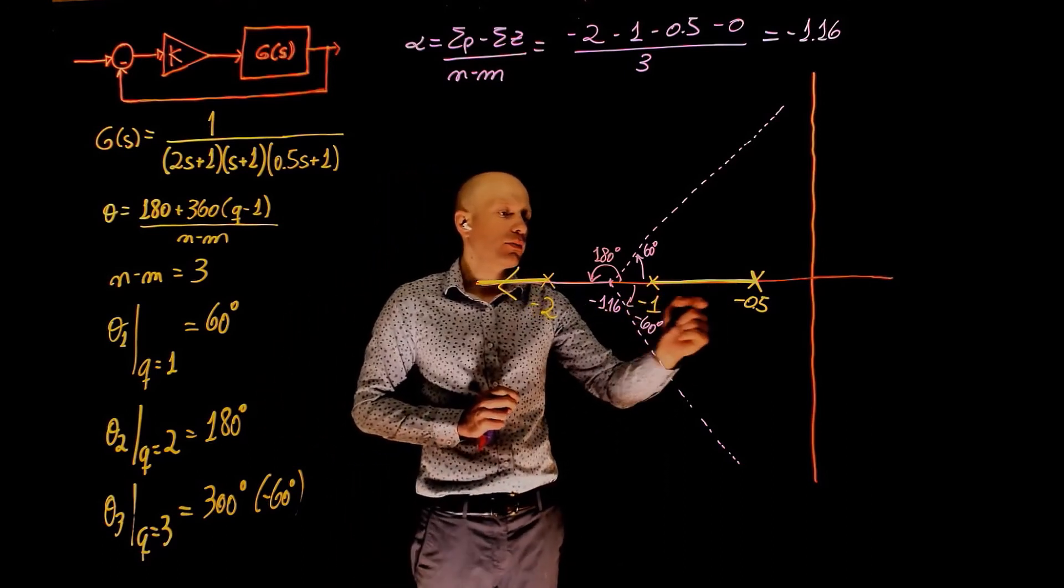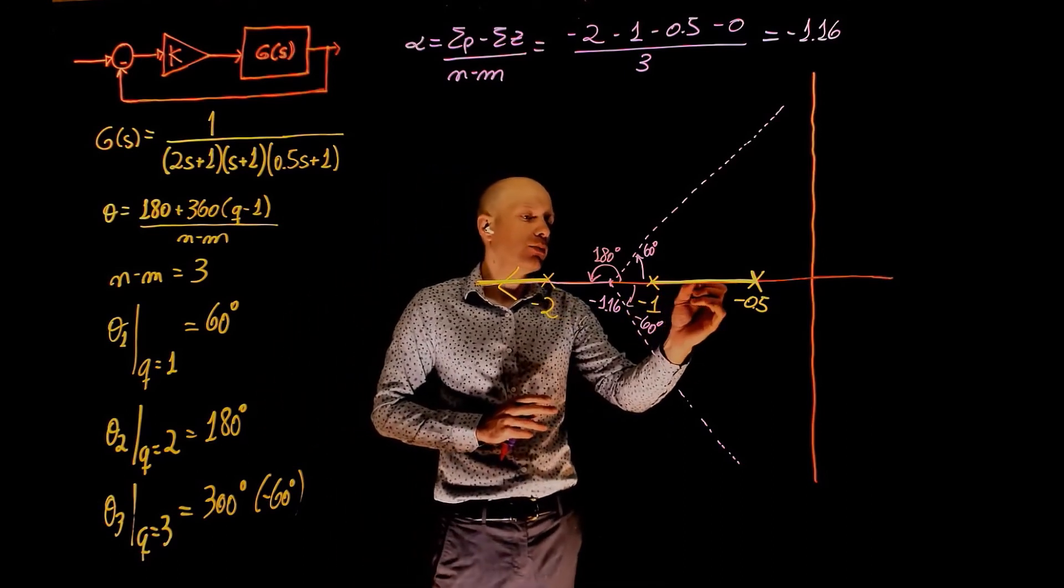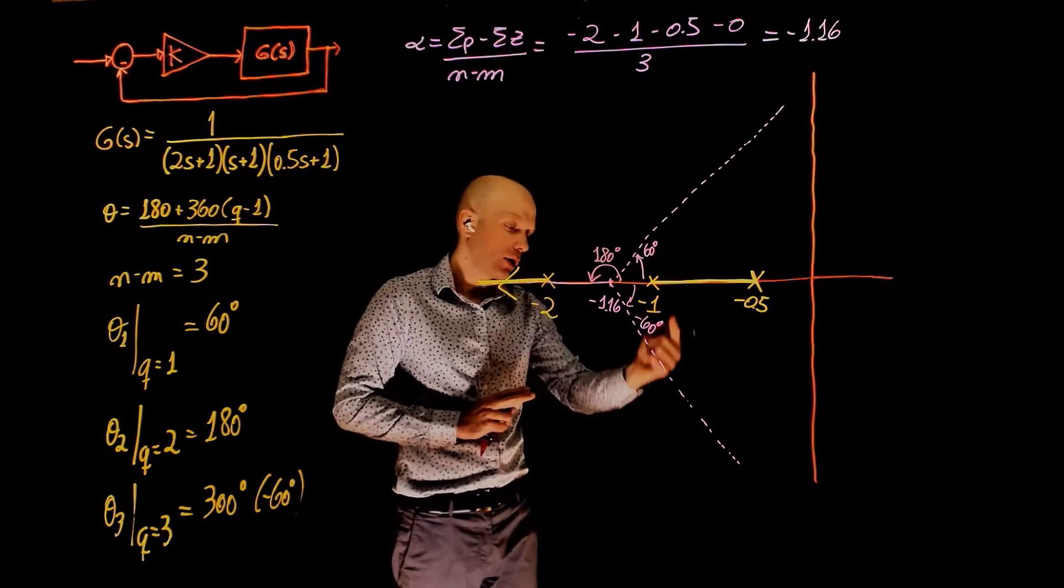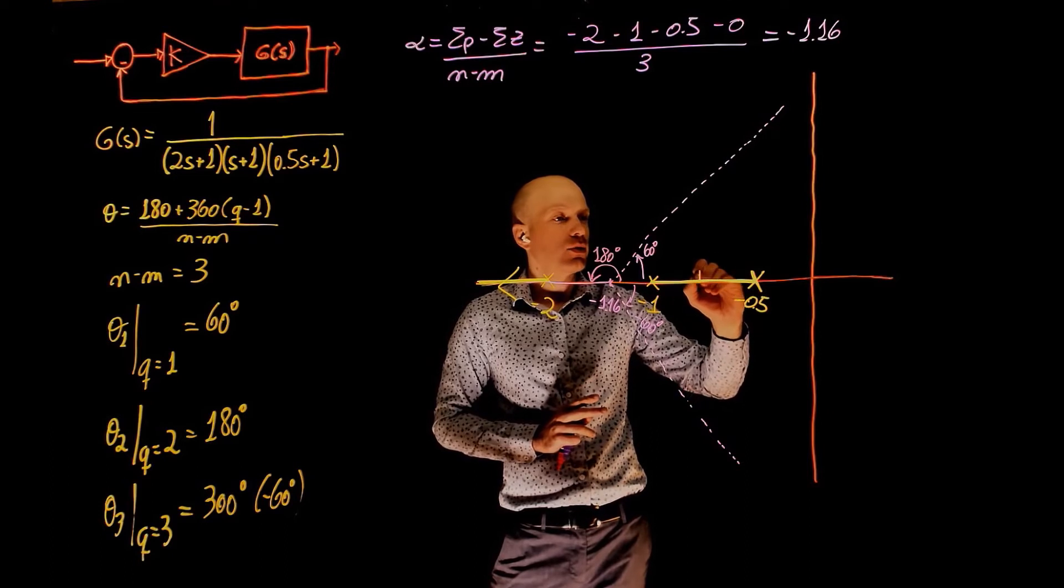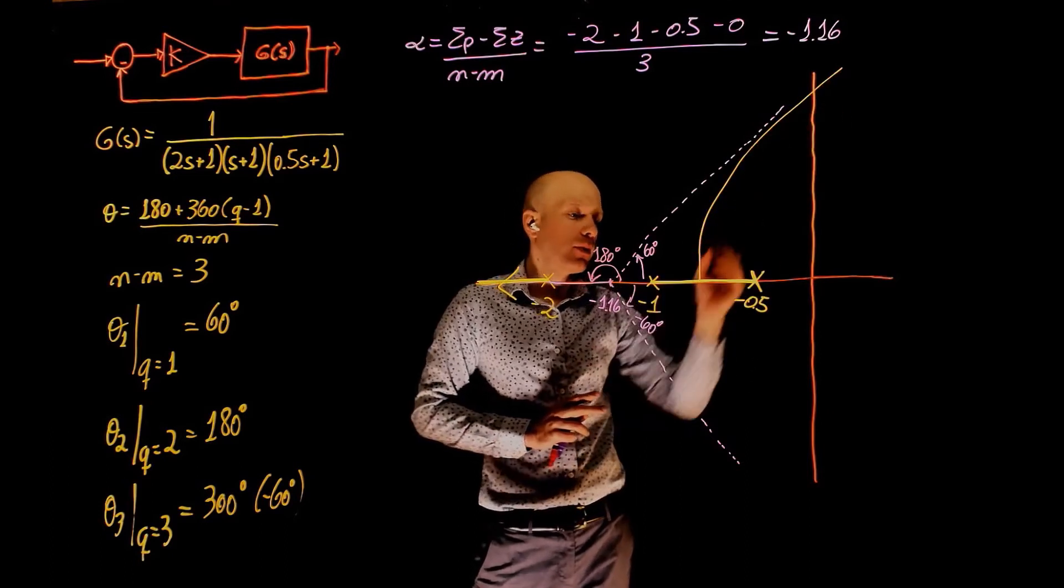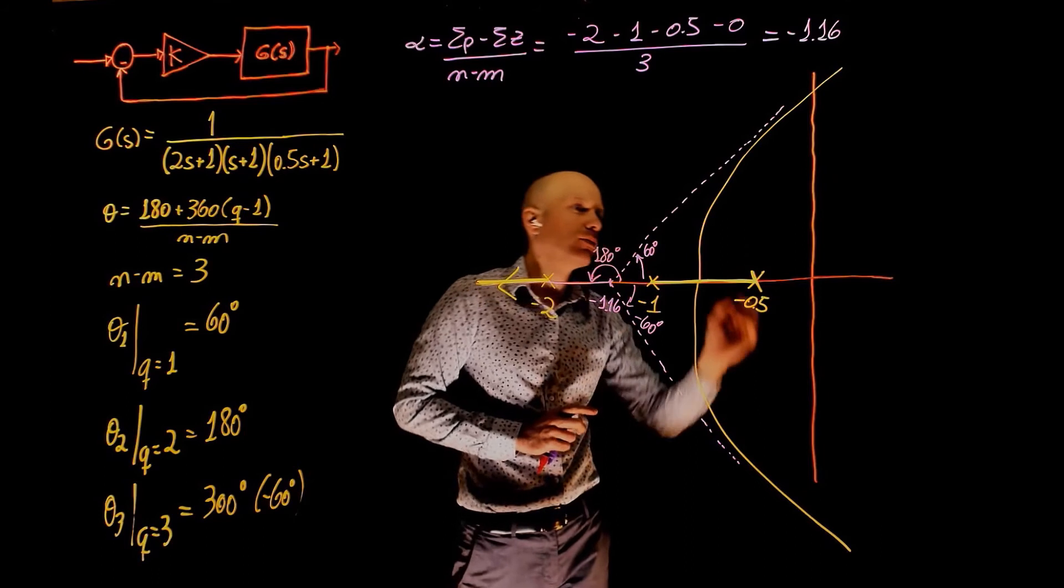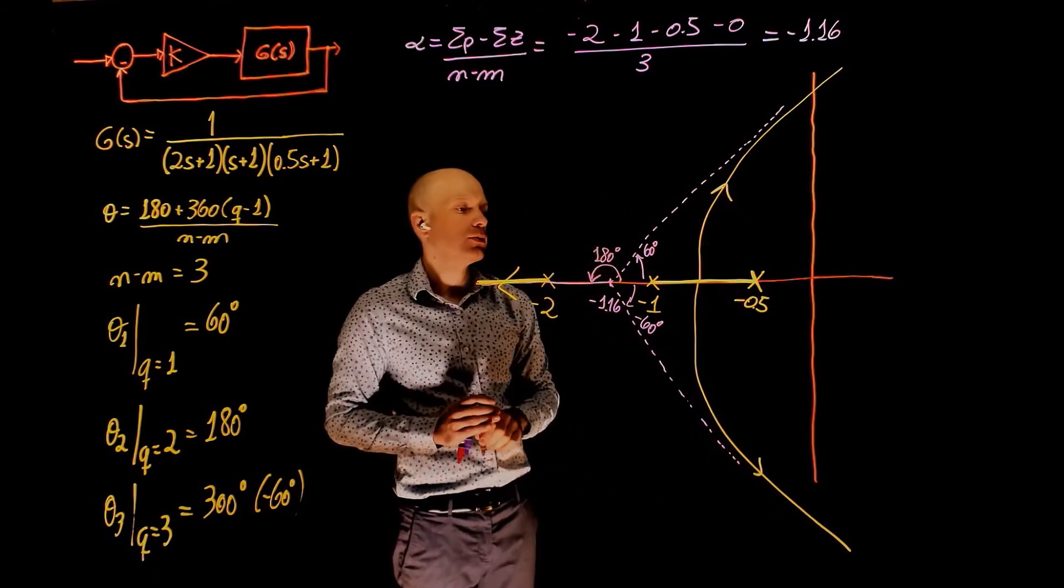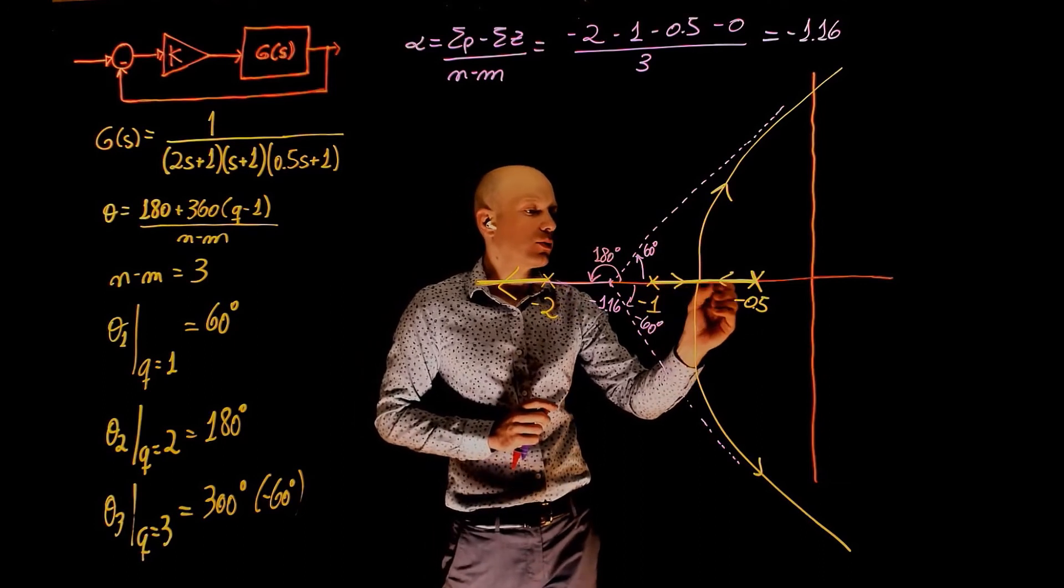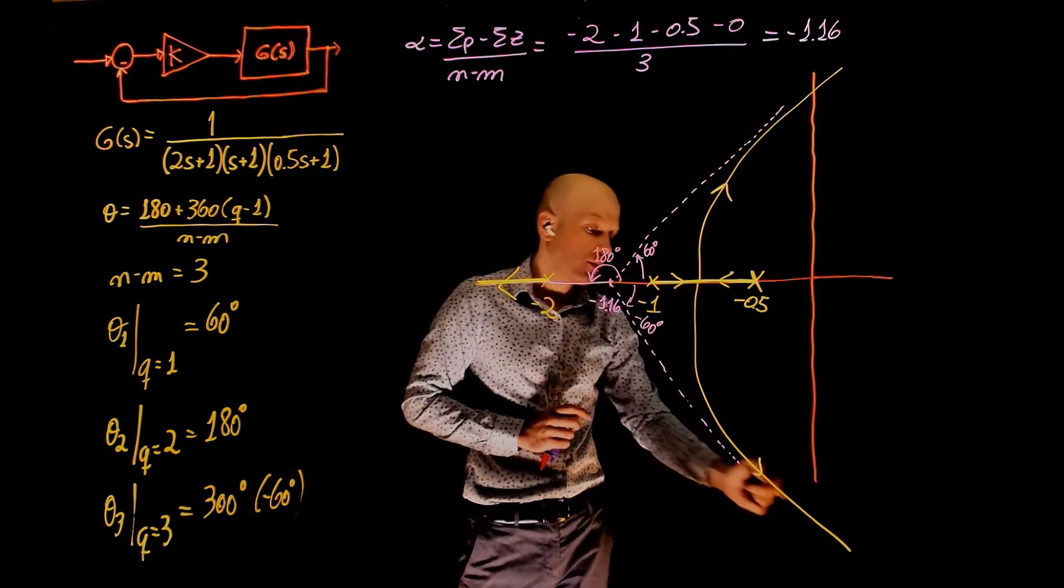Now what happens to these two? These two have to come together at one point and break away and go to the asymptotes. One of these poles now goes up and the other one goes down. And then they become tangent to those asymptotes. So these poles will come together to this point. One goes up, one goes down.